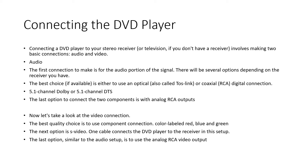For video connection, the best quality choice is component connection — three cables color-labeled red, blue, and green — with superb quality, but only available on extremely high-end receivers and television sets. The next option is S-Video, with one cable connecting the DVD player to the receiver. The last option is the analog RCA video output, usually color-labeled yellow on both ends, which delivers the lowest quality but suffices for most older analog televisions.